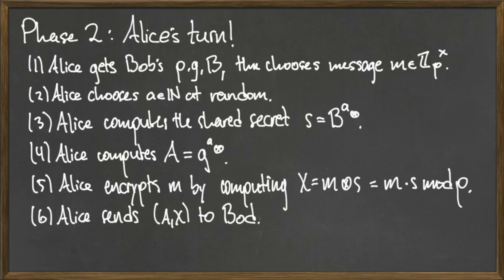Alice also uses little a to compute her own capital A, which is equal to Bob's generator g raised to the a-th power. To ensure that Alice's message is only able to be opened by Bob, she encrypts her integer m by computing capital X, which is equal to m times s mod p. She then sends the ordered pair (capital A, capital X) to Bob.